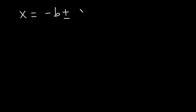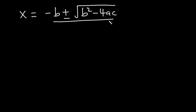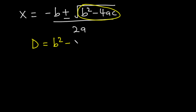The general quadratic formula is given by x equals negative b plus or minus the square root of b squared minus 4ac, divided by 2a. What's inside the square root is called the discriminant, given by D equals b squared minus 4ac, and it is used to determine the nature of the roots of a quadratic equation.